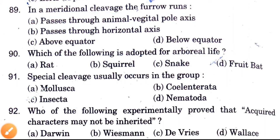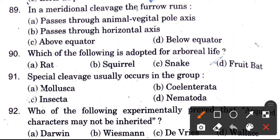Which of the following experimentally proved that acquired characters may not be inherited? The answer is Weismann.